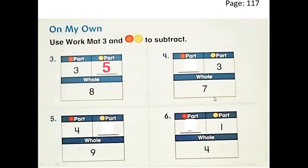Excellent! Let's see the next one. Here we have 7 in all. In the first part we have 3 yellow counters. What about the second part? It's missing — how can we find this part? You can put 3 in your head and count up: 3 in your head, then 4, 5, 6, and 7. So we need 4 in the second part.